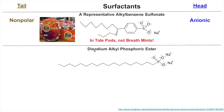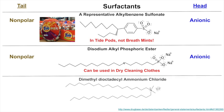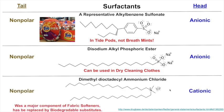Disodium alkyl phosphoric ester has a non-polar tail and an anionic head — it can be used in dry cleaning. And dimethyl dioctyl ammonium chloride has two non-polar tails and is cationic — it was a major component of fabric softeners, but it's been replaced with more biodegradable substitutes because this one took a while to break down in nature.